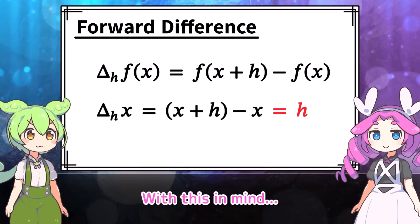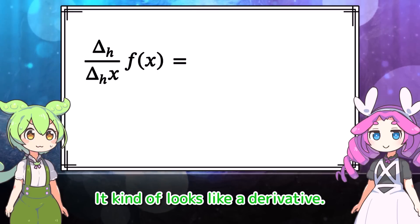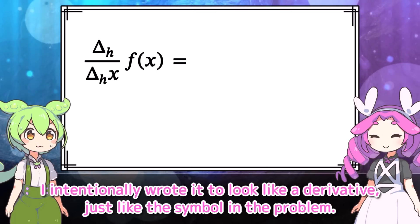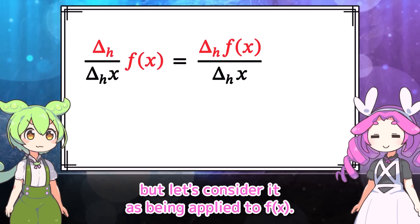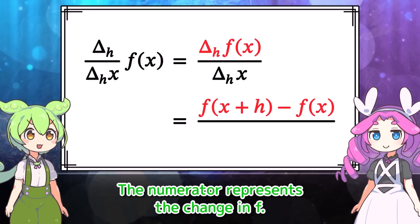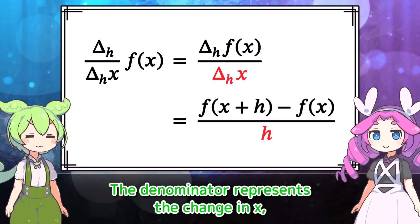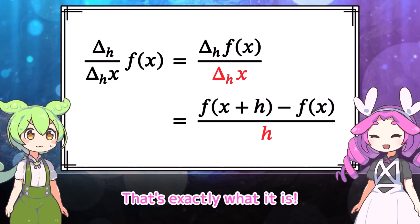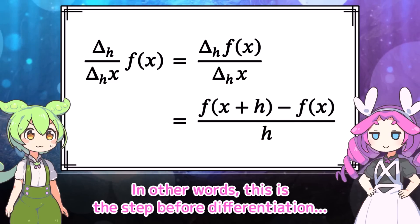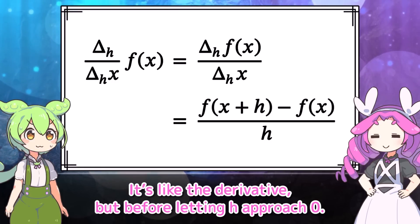With this in mind, let's try calculating this expression. This kind of looks like a derivative. I intentionally wrote it to look like a derivative, just like the symbol in the problem. The numerator has delta h applied to f of x — it represents the change in f. The denominator represents the change in x, which is simply h itself. Oh, this is the slope of the line. That's exactly what it is. In other words, this is the step before differentiation — it's like the derivative, but before letting h approach zero.